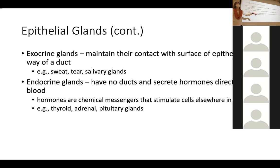Sweat, tears, and salivary glands are all releasing something to the surface of our body — those are exocrine. The adrenal glands release hormones directly into the bloodstream — those are endocrine. Make sure you know the difference between exocrine and endocrine glands.